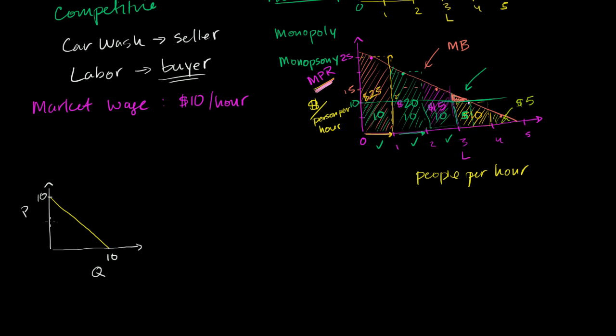And I'll do one other point on the demand curve. At a price of five, a quantity, or $5 per hour, this firm would demand, if we're thinking of it in terms of labor, at a price of $5 per hour of labor, this firm would demand five people per hour. And obviously, what I'm going to do is general to any demand curve, but we'll just keep it in the labor mindset.